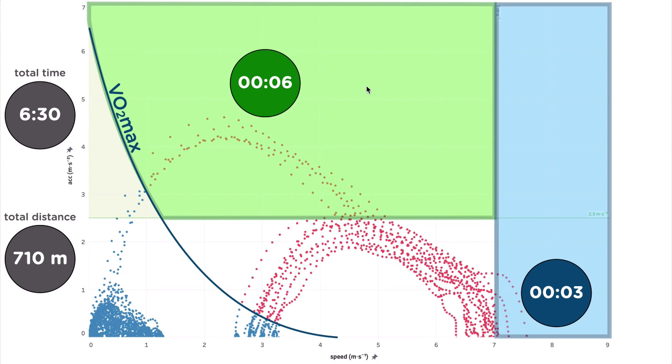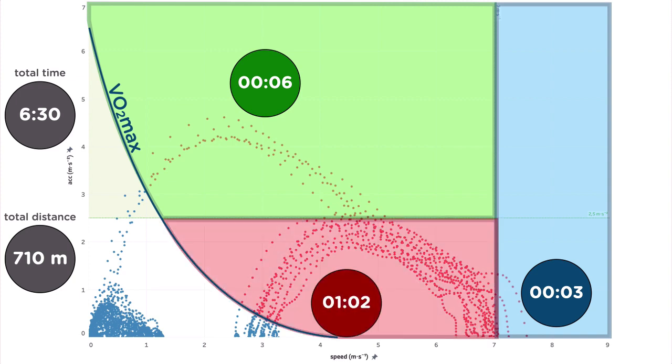However, if we include in this the activity performed above the VO2max of the athlete but below both thresholds, we have more than one minute in the red area.